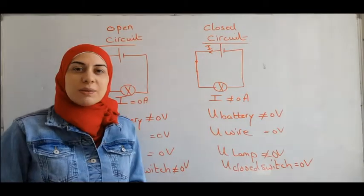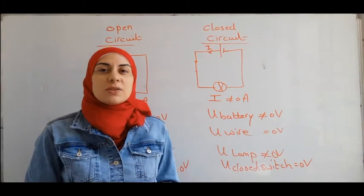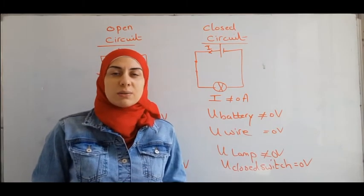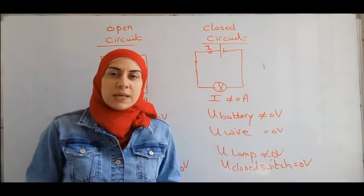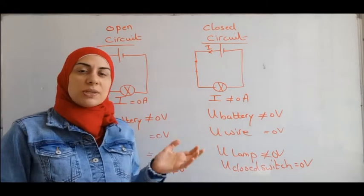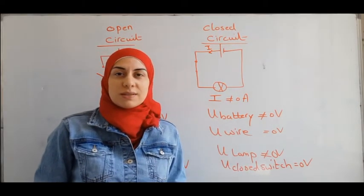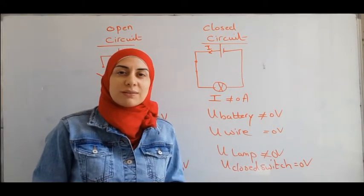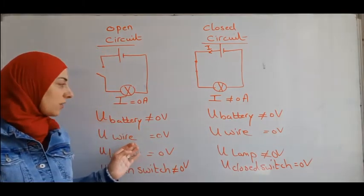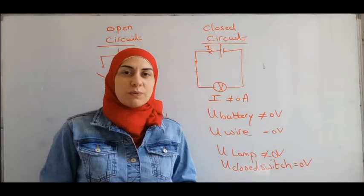Now let's see the voltage across different components in the case of an open circuit and a closed circuit. In both cases, the voltage across the battery is different from zero because it is the source of electric energy. And in both cases, the voltage across the wire equals zero volts.